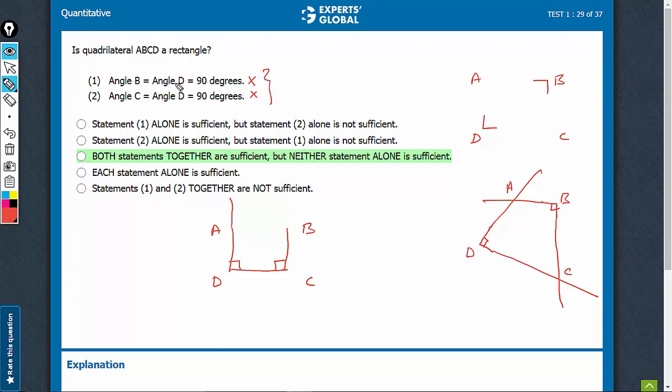On combining, however, we would know that three angles are 90. If B is 90, D is 90 and C is also 90, so then it has to be a rectangle. So, combining, definitely, we get yes as an answer. Combining works. C is the right answer.